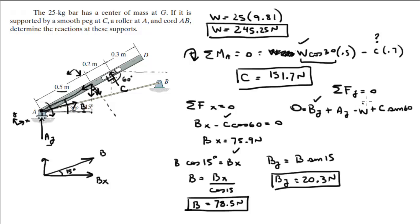We have B_Y. We have the weight. We have C. You plug them in and you solve for A_Y. And you get that A_Y is equal to 93.6 newtons.